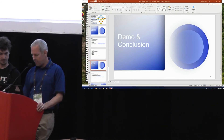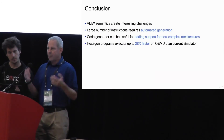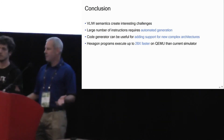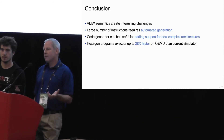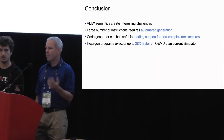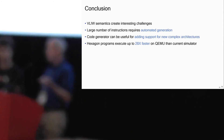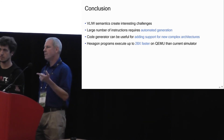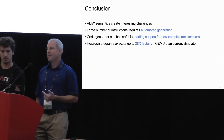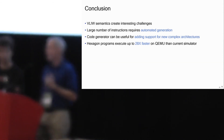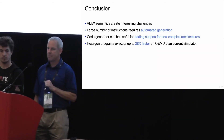Let's wrap things up. We learned that the semantics of a VLIW processor make for interesting challenges when generating code. The large number of Hexagon instructions requires automation in TCG generation. We believe this code generator approach can be useful for other new architectures wanting to port to QEMU. And we're very happy about the performance — 28 times faster than the current simulator. Questions?